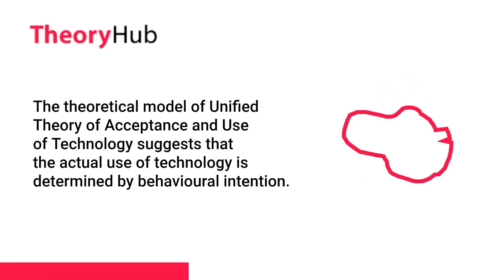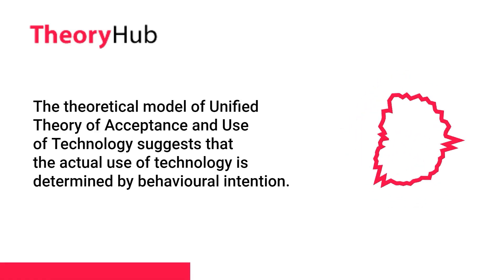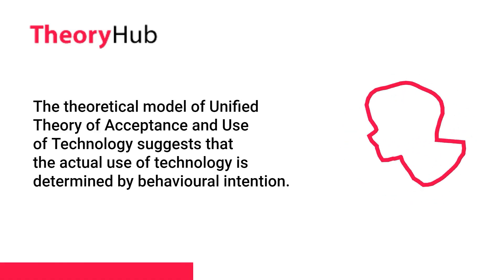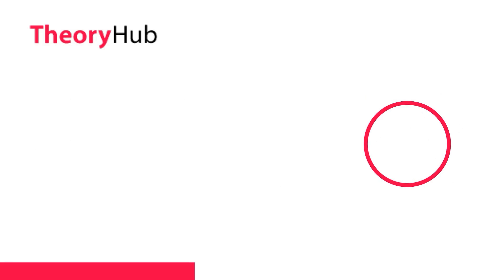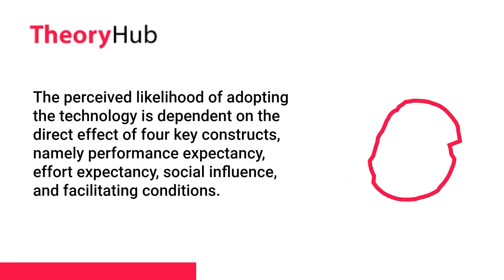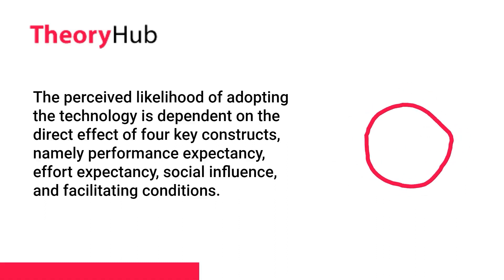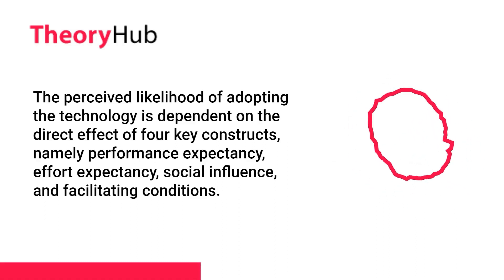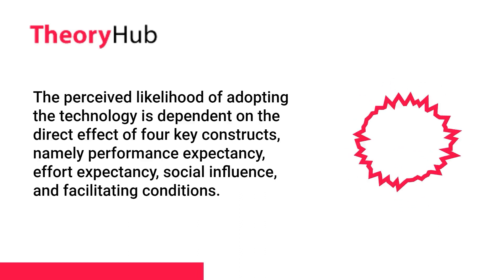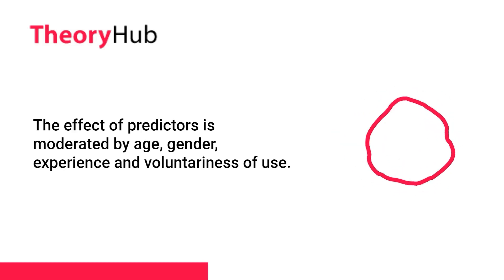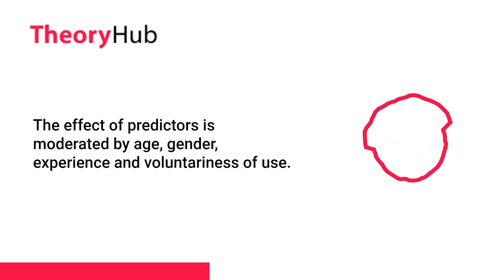The theoretical model of the Unified Theory of Acceptance and Use of Technology suggests that the actual use of technology is determined by behavioral intention. The perceived likelihood of adopting the technology is dependent on the direct effect of four key constructs: namely performance expectancy, effort expectancy, social influence, and facilitating conditions. The effect of these predictors is moderated by age, gender, experience and voluntariness of use.